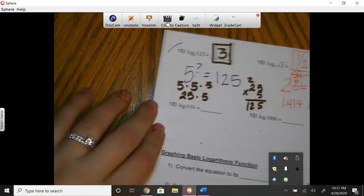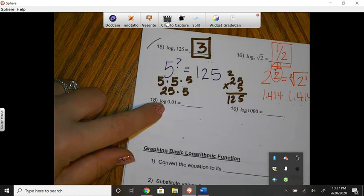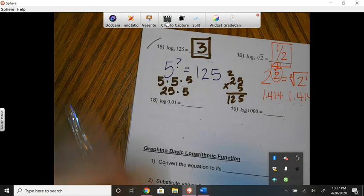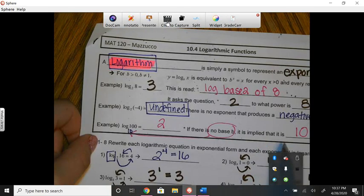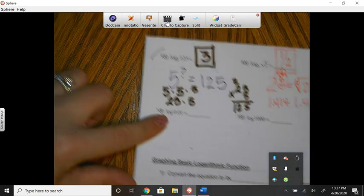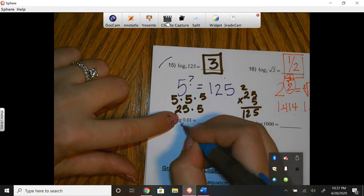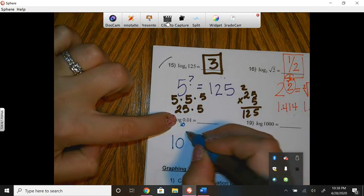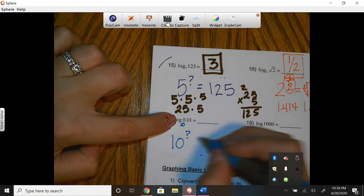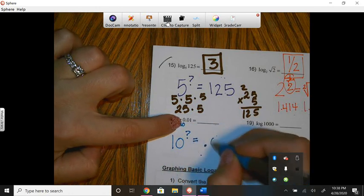All right. Let's look at number 18. So when we took our notes in the last video, we said that if there is no base, it is a 10. So since this one doesn't have the little number down here, it's a 10. So this is saying LOG means find the exponent 10 to what power is 0.01?